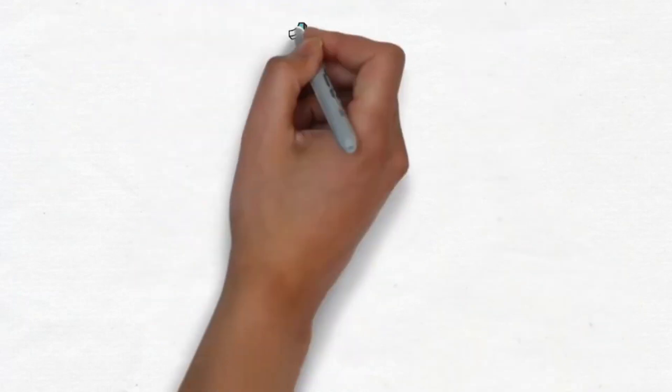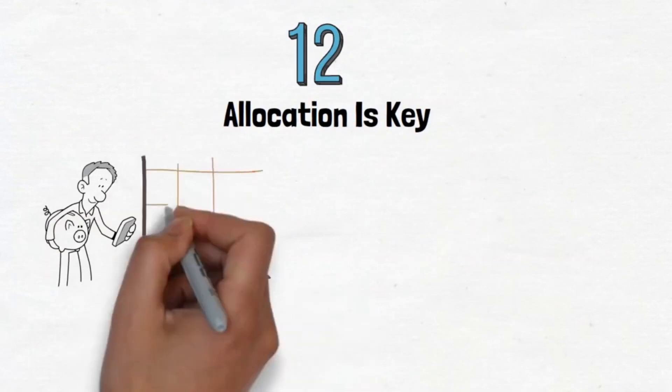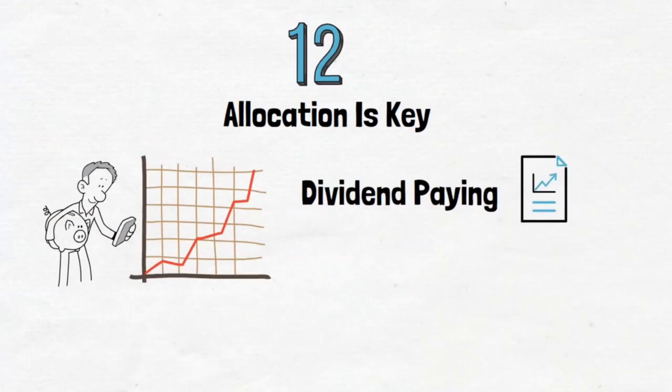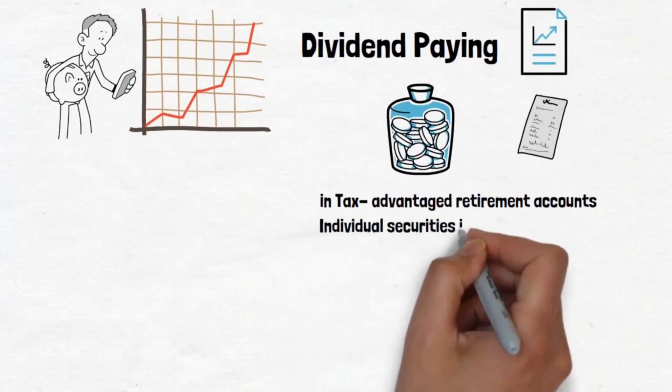12. Allocation is key. When you invest in the stock market, how you distribute your cash has a huge impact. Dividend-paying bonds, equities, and mutual funds should typically be kept in tax-advantaged retirement accounts, while individual securities should be kept in a brokerage account.